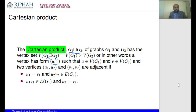Two vertices (u1, u2) and (v1, v2) in the Cartesian product are adjacent if: the first condition — the first components are the same (u1 = v1 in G1) and the second components u2, v2 form an edge in G2. The second condition — if the first condition doesn't hold, then if u1 v1 is an edge in G1 and the second components are the same, there is an edge between these two vertices.